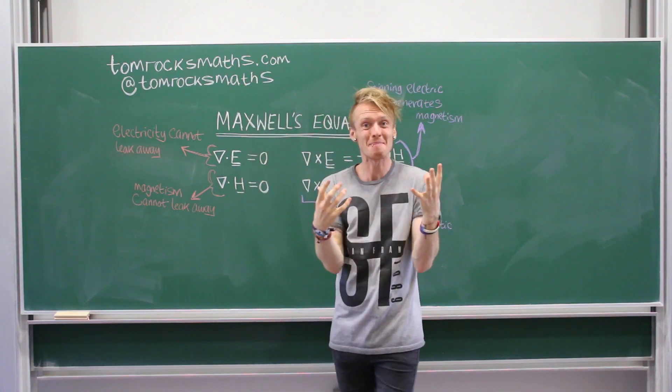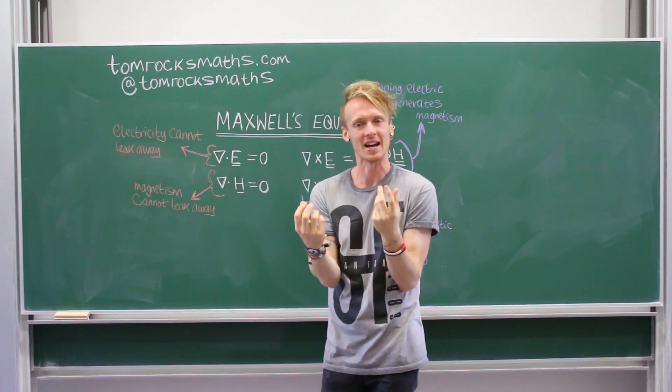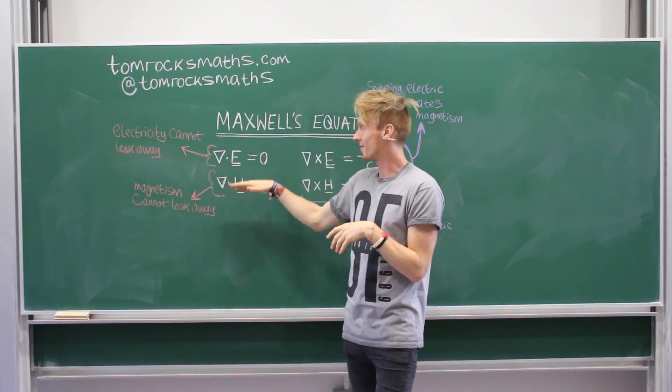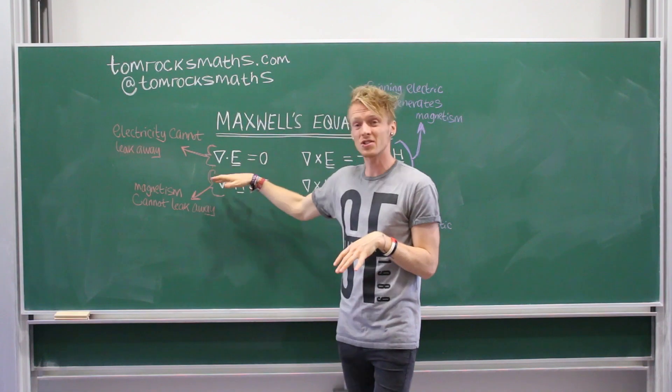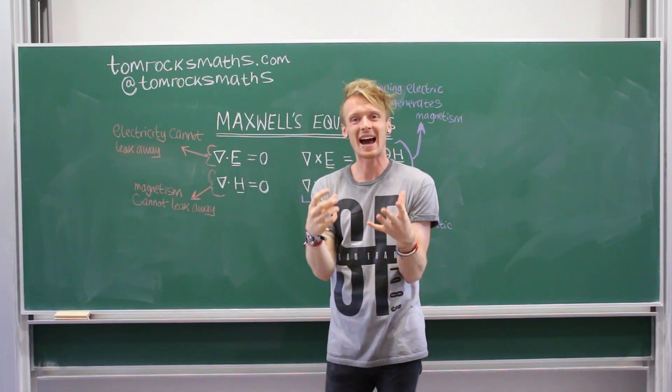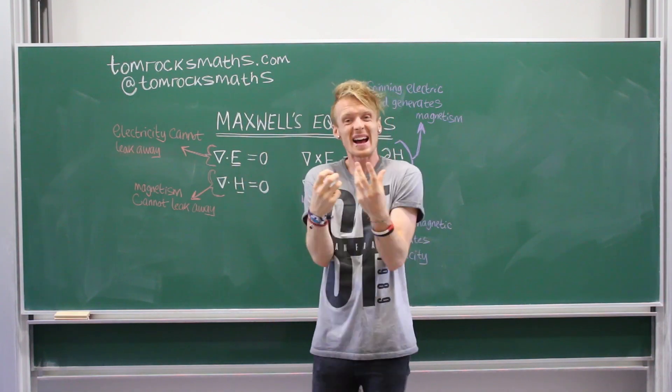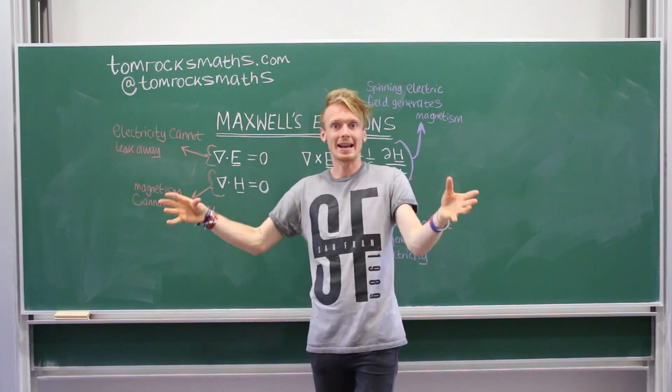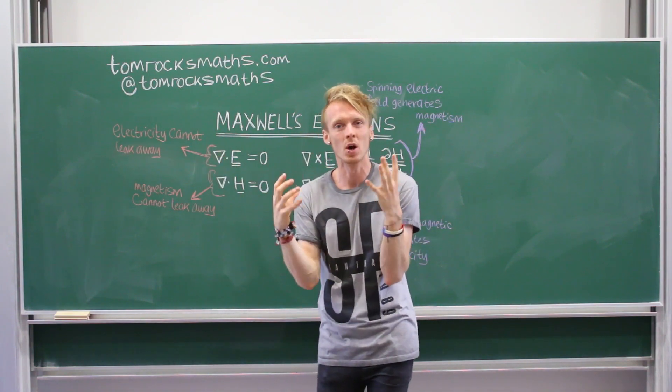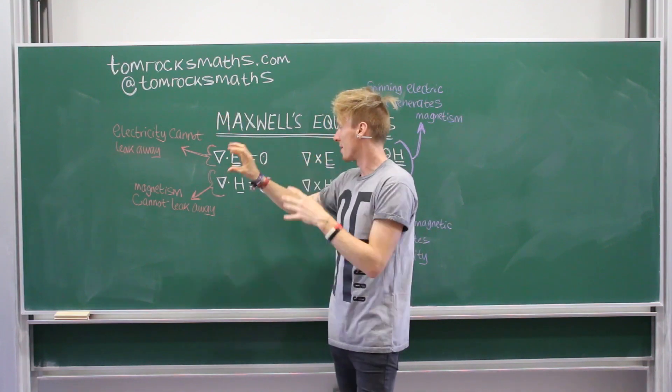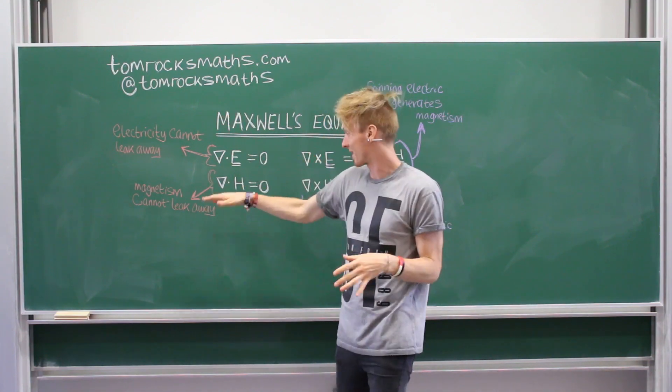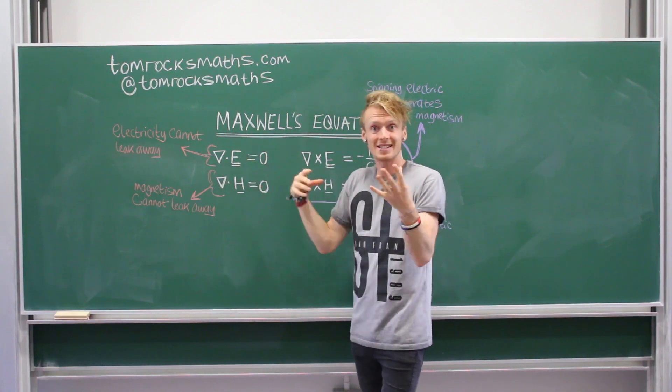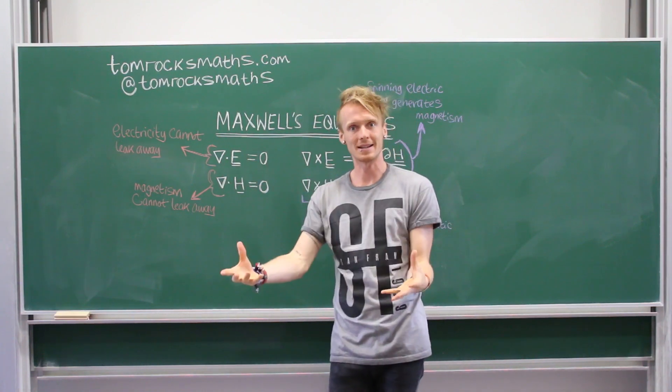I've written them out in pairs because they're very similar. So, here we have these first two equations. And the top one just tells you that electricity cannot leak away. So, it has to go somewhere. If you have electricity, it can't just leak away like down a plug hole. It's got to go somewhere. And magnetism also cannot leak away. That's why this equation looks the same. Because it's telling you the same thing, but about magnetism.